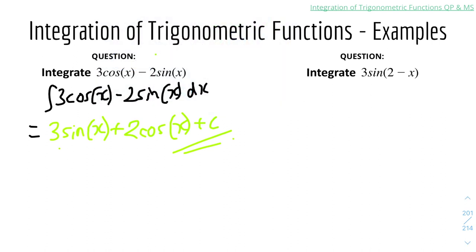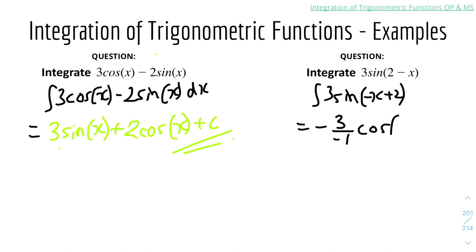Question two: integrate 3sin(2 − x). I'll rewrite the bracket to make it clearer as 3sin(−x + 2). Remember that when we integrate sin, it becomes minus cos. So put a minus sign first. The coefficient 3 stays, but because we have an ax + b form, we divide by the derivative of the bracket. Differentiating (2 − x) gives minus 1. So we get minus 3 over minus 1 times cos(2 − x) + c. Because we have two negative signs — one from the sin-to-cos rule, one from the derivative of the bracket — they cancel out, giving the final answer: 3cos(2 − x) + c.